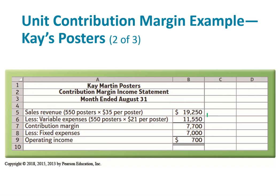Looking at the total sales revenue — we can do it in total or per unit. Total sales revenue is the number of posters times the sales price. The variable costs at $21 per poster times the number of posters sold gives us the contribution margin. The contribution margin is the amount that contributes to the fixed costs, and whatever's left over becomes the operating income.